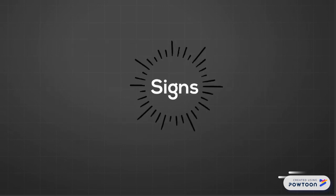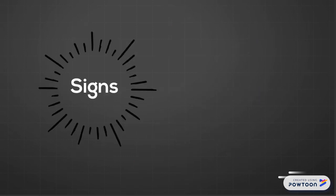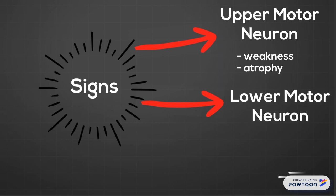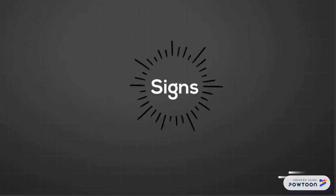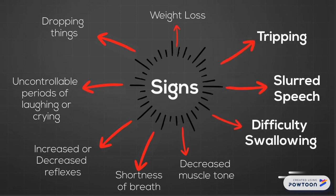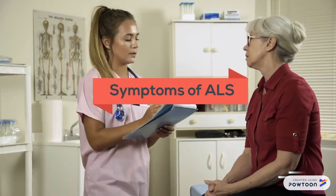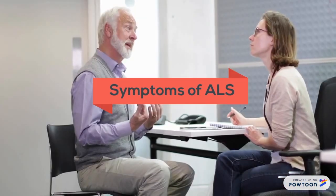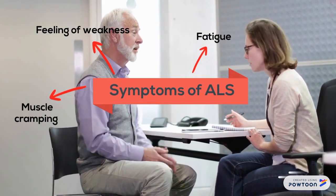When discussing the signs of a disease, we are referring to what can be seen or measured in an individual. Signs of upper motor neuron degeneration are associated with weakness and atrophy, whereas signs of lower motor neuron degeneration are related to spasticity and pathologic reflexes. Here we have compiled a list of signs associated with ALS, which may include tripping, slurred speech, and difficulty swallowing. Symptoms, on the other hand, are what an individual experiences or feels. Some symptoms that may lead a doctor to suspect ALS include feeling of weakness, fatigue, and muscle cramping.